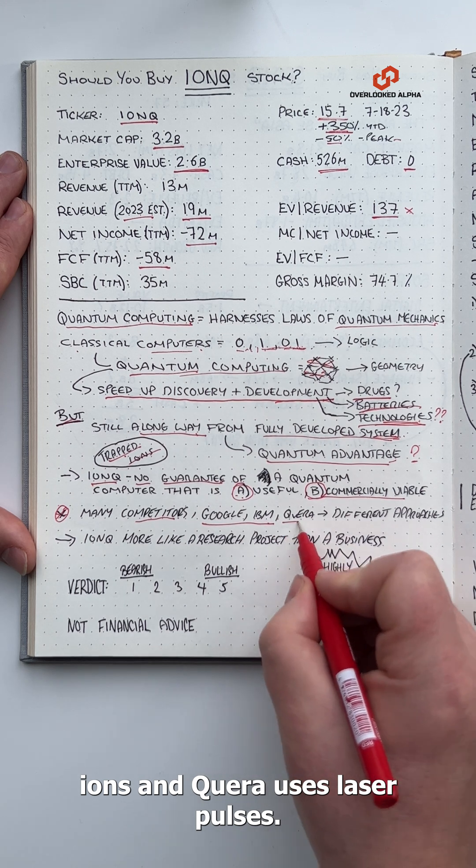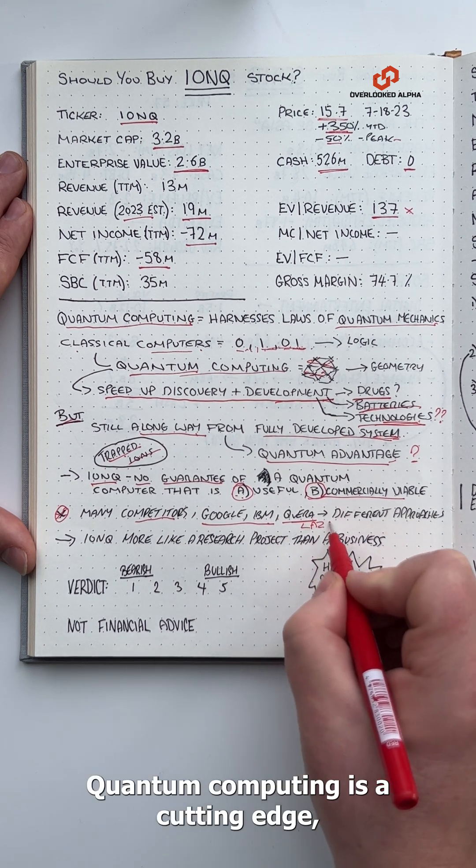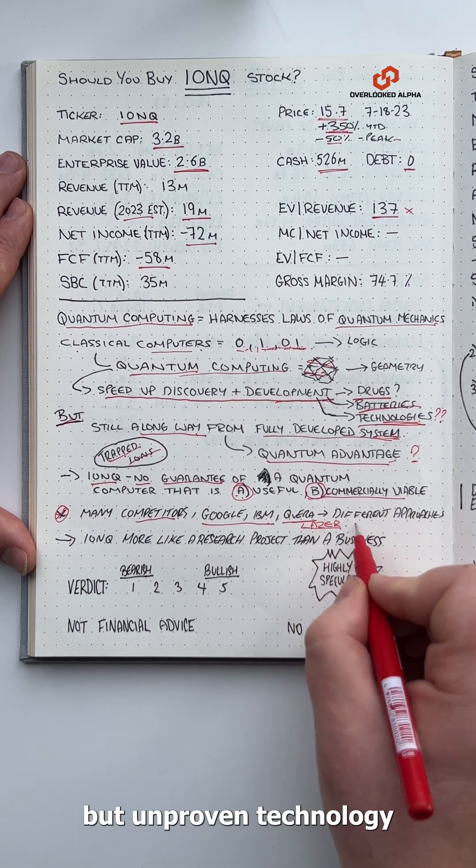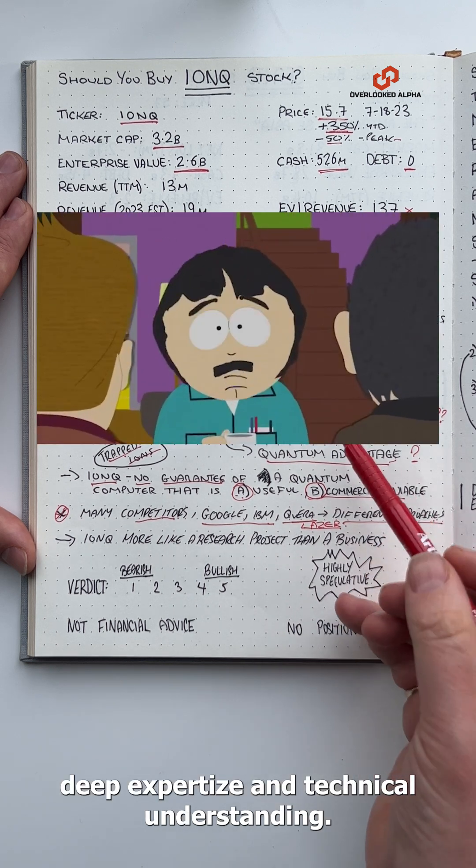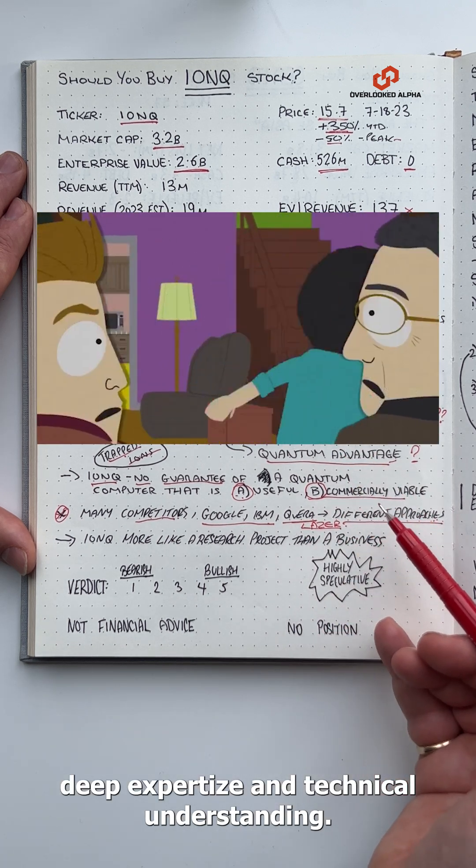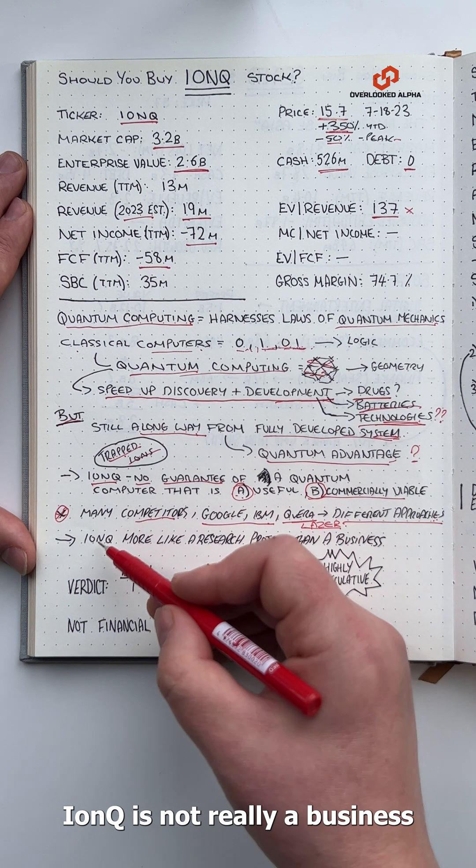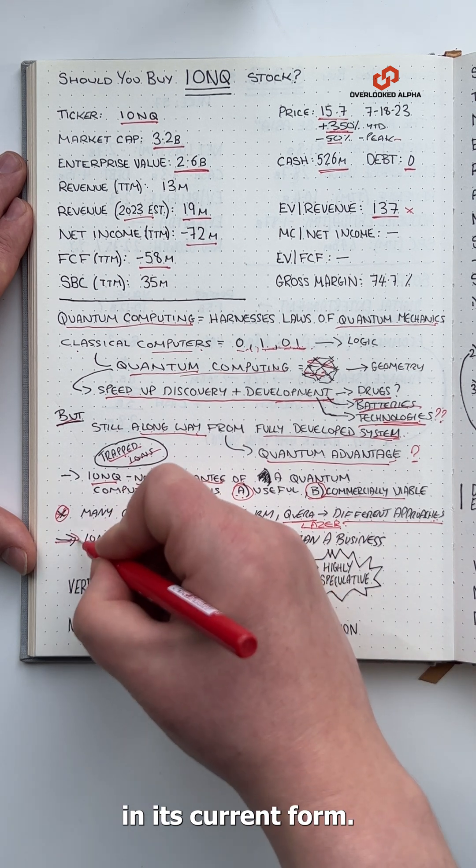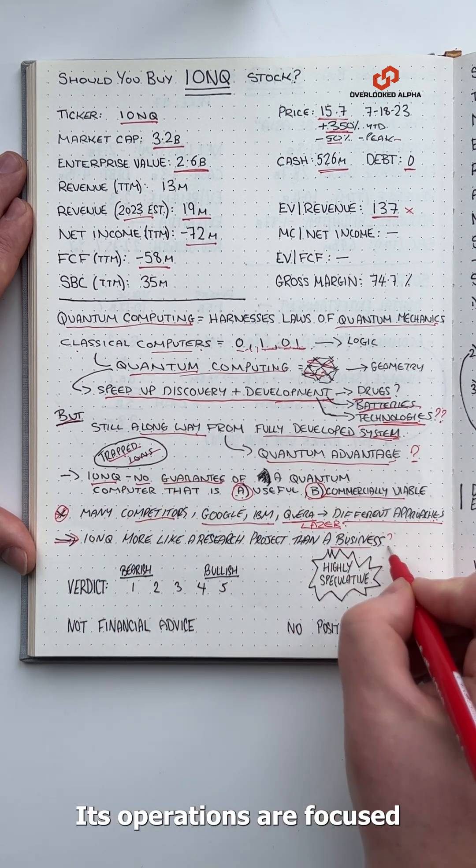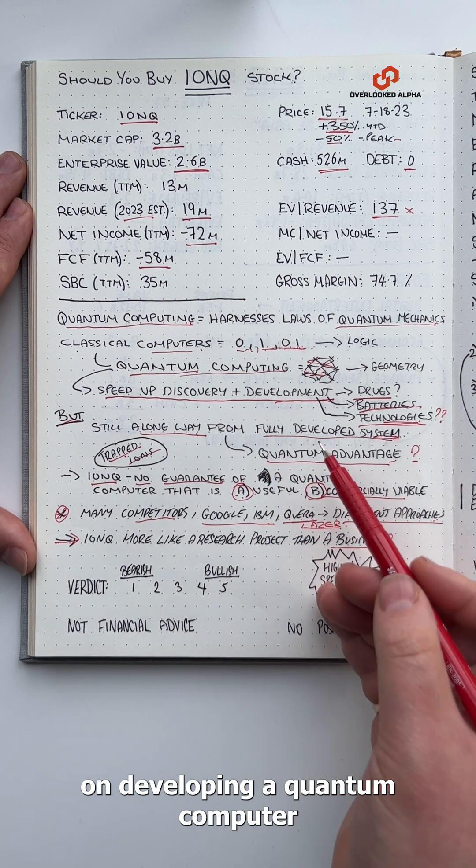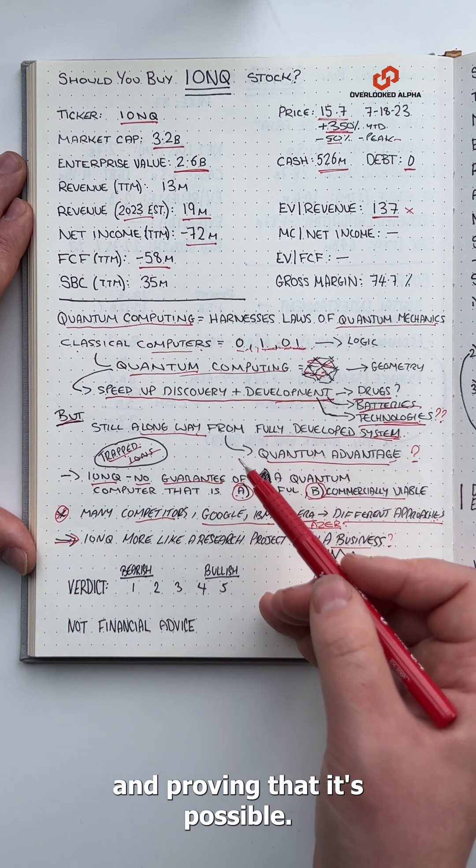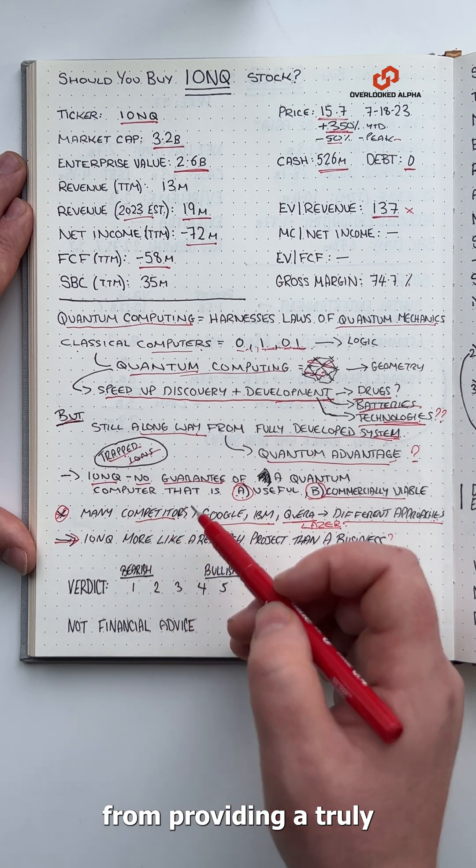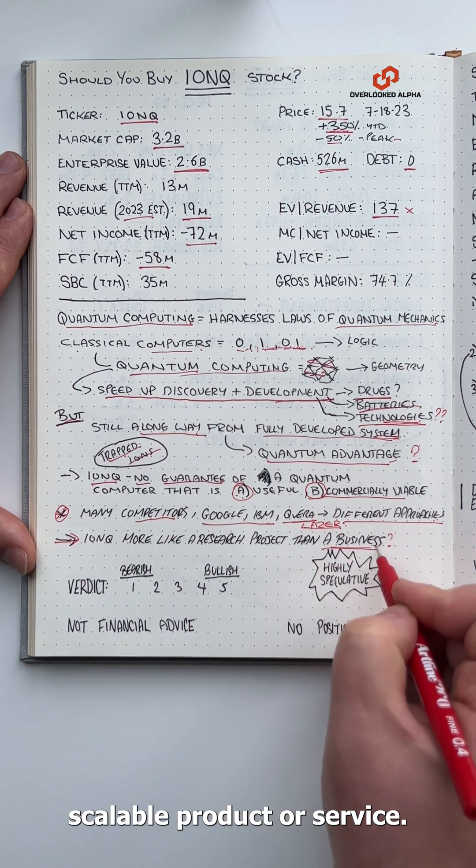Quantum computing is a cutting edge but unproven technology that requires deep expertise and technical understanding. But essentially, IonQ is not really a business in its current form. Its operations are focused on developing a quantum computer and proving that it's possible. The company is a long way from providing a truly scalable product or service.